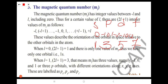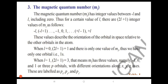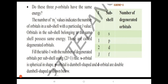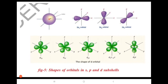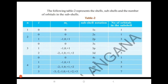The magnetic quantum number represents the spatial orientation of atomic orbitals with respect to the coordinate axis. The number of degenerate orbitals is 1 for S, 3 for P, 5 for D, and 7 for F. This describes the shells, sub-shells, and the number of orbitals in the sub-shells.